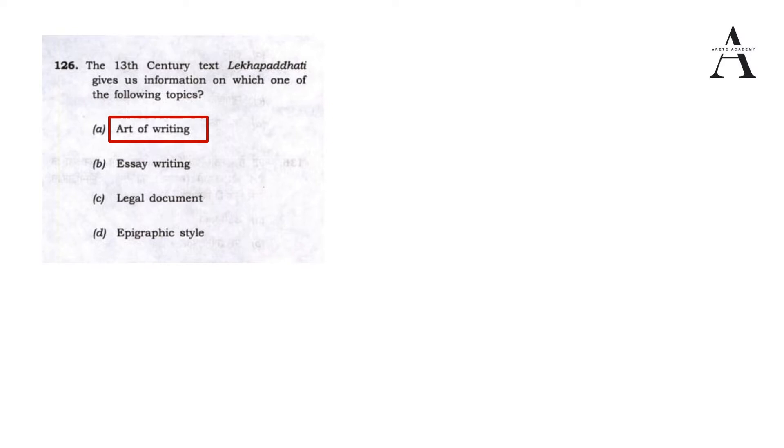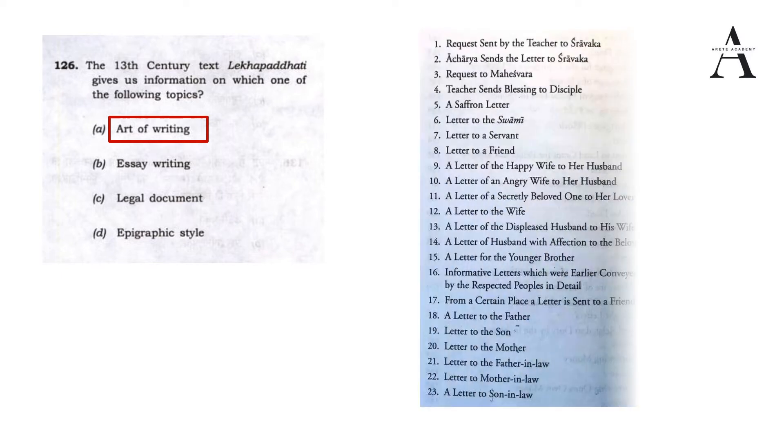This book was written as a guide for official scribes or professional letter writers. It tells us about public transactions, administration, rules for drafting land grants, how treaties were drafted between kings, credit and banking systems, how documents were maintained, mortgage deeds, creditor-judicial disputes, and even private letters.